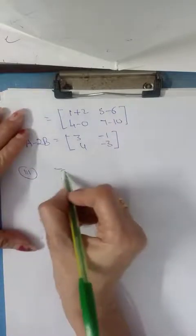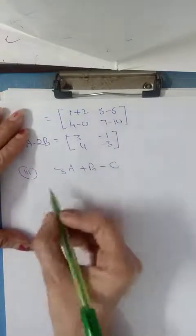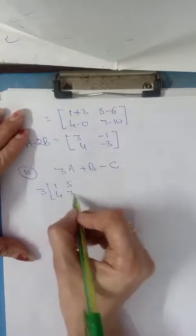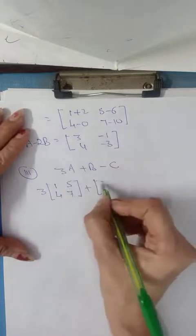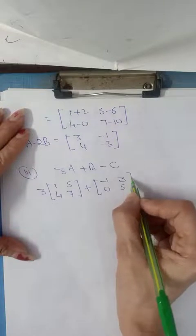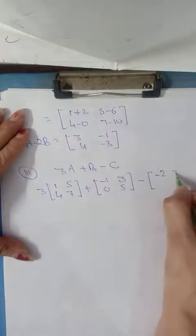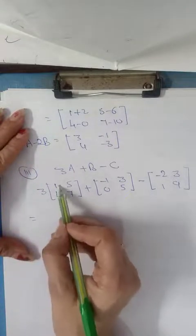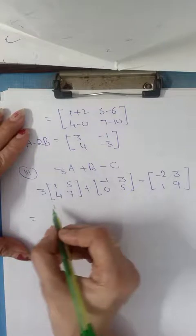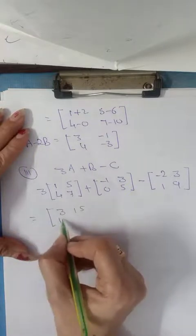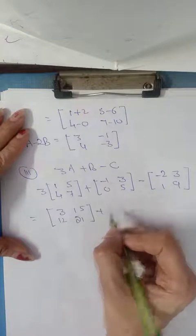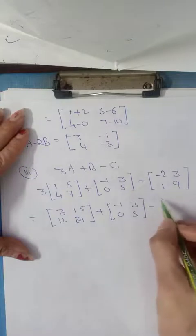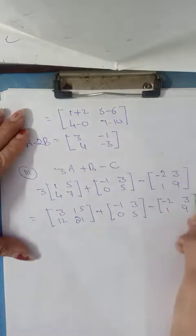Now, third part is 3A plus B minus C. So 3 into matrix A, 1, 5, 4, 7, plus matrix B, that is -1, 3, 0, 5, minus matrix C, -2, 3, 1, 9. Now, 3A: each element of A is multiplied by 3, so 3, 15, 12, 21, plus -1, 3, 0, 5, minus -2, 3, 1, 9.